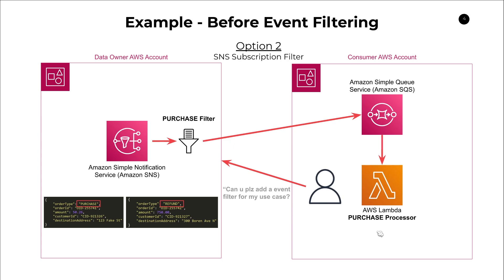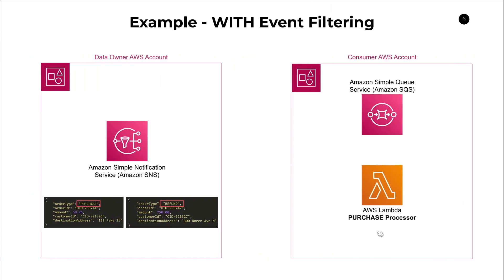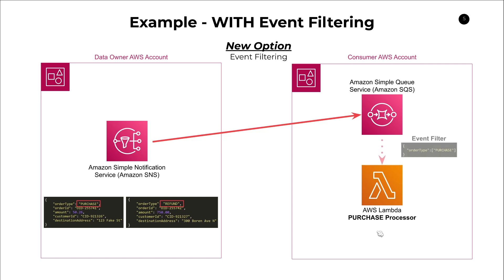This brings us to the new option: using event filtering. With event filtering, we no longer need that SNS filter — just a normal subscription as in the first example. All messages published to the SNS topic go directly to the queue. Now when we wire together our Lambda function to our queue, which currently contains all messages — both purchases and refunds — we can specify an event filter. You simply specify the field you are interested in and the value you want delivered to your Lambda function. Because we only care about order type purchase, we define an event filter for that, and as a result only messages of type purchase will ever invoke this Lambda function.